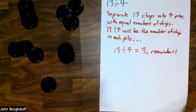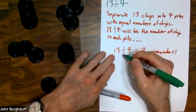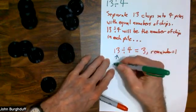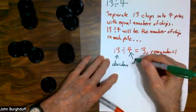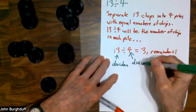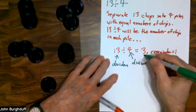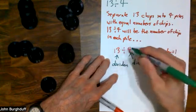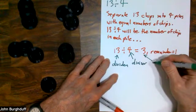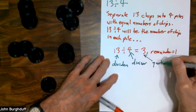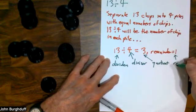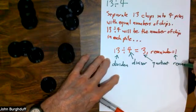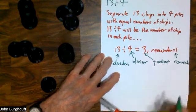The terminology: when you do a division problem, the number you're dividing into is called the dividend. The number you're dividing by is called the divisor. The result you get — as in the number of chips in each pile — is called the quotient. And there is potentially a remainder as well.